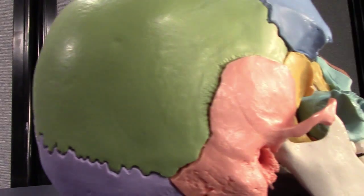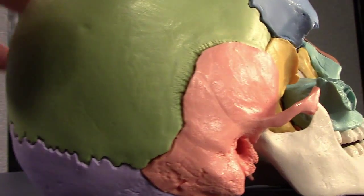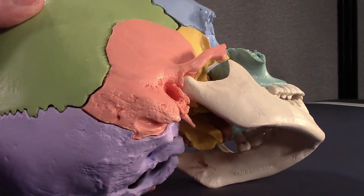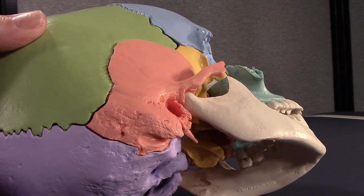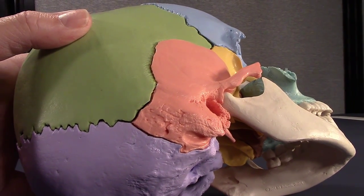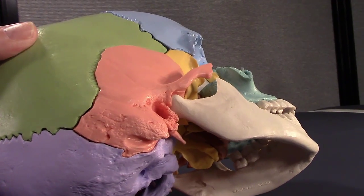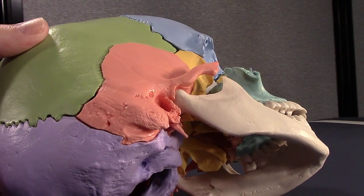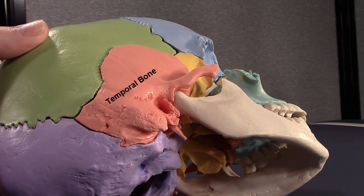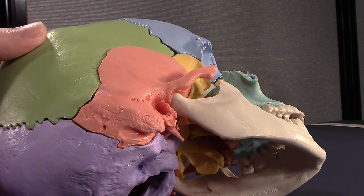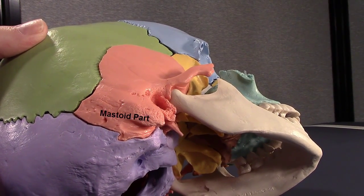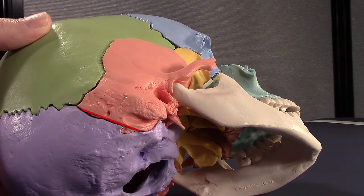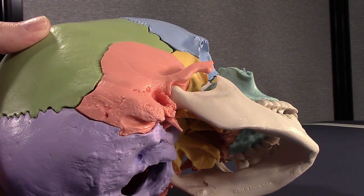So if we keep going here to the side, we can see the lambdoid suture continues right on down and it articulates with that salmon color bone, which is called the temporal bone, specifically that's the mastoid portion of the temporal bone. So that suture right there, that's called the occipital mastoid suture.